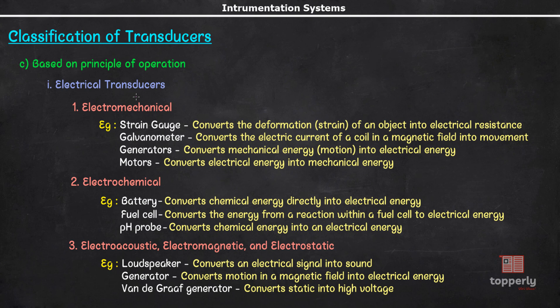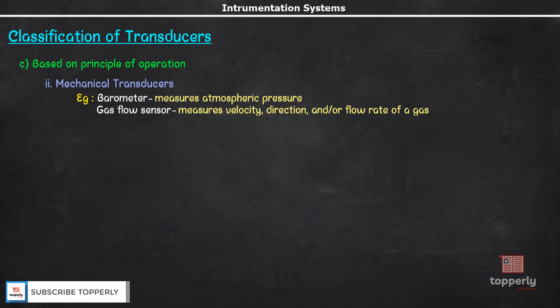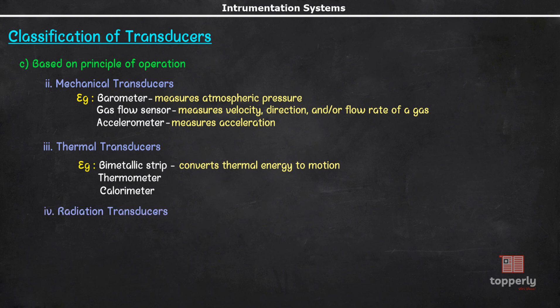Now, the next class of transducers based on operation is mechanical transducers. Examples of mechanical transducers are barometer, gas flow meter, accelerometer, etc. Then we have thermal transducers. For example, a bimetallic strip which directly converts thermal energy into motion. Some other examples are thermometer, calorimeter, etc.